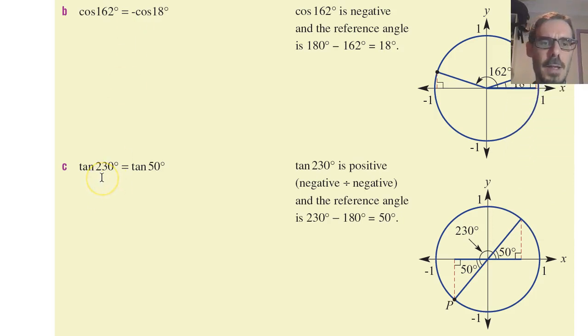Tangent 230. Well, 230 is down here. Its reference angle, the angle away from the x-axis, is 50 degrees. So tan 230 is going to be numerically the same as tan 50.